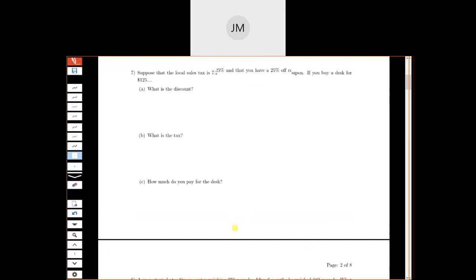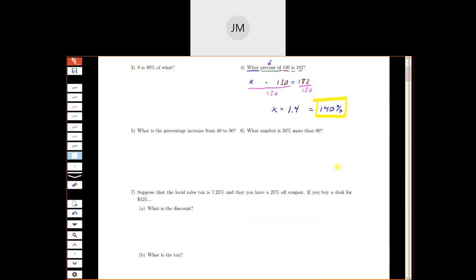Sometimes the language isn't straightforward enough for the little translation trick. So I'm going to translate as much as I can. So what number? So that gives me an X. Is is equals. 35%. So that's 0.35. 35% more than 80. So that's where I have to be a little bit careful. I want 35% more than. So what we're going to do is first figure out, well, what is 35% of 80? So 35% of 80 is 0.35 times 80. Which is 28.